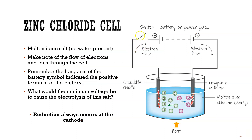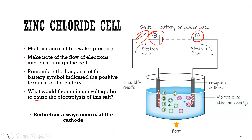Another type of electrolytic cell uses a switch in the circuit — closing the switch completes the circuit with the negative and positive polarity of the power source. This cell uses graphite electrodes, which are inert and commonly used in molten salt electrolytic cells. With molten zinc chloride, Zn²⁺ is the only oxidant present and will be reduced to Zn, while Cl⁻ is oxidized to Cl₂ gas. Pause the video and calculate the minimum voltage required to cause electrolysis of this salt using the electrochemical series.